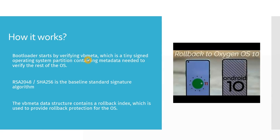The bootloader starts by verifying VB metadata, which is a tiny signed operating system containing metadata needed to verify the rest of the OS. The Android device booting starts from the bootloader, and the bootloader takes help of VB meta — a very tiny operating system partition containing data required to verify the rest of the OS. VB meta uses RSA-2048 and SHA-256 algorithms for signature purposes.